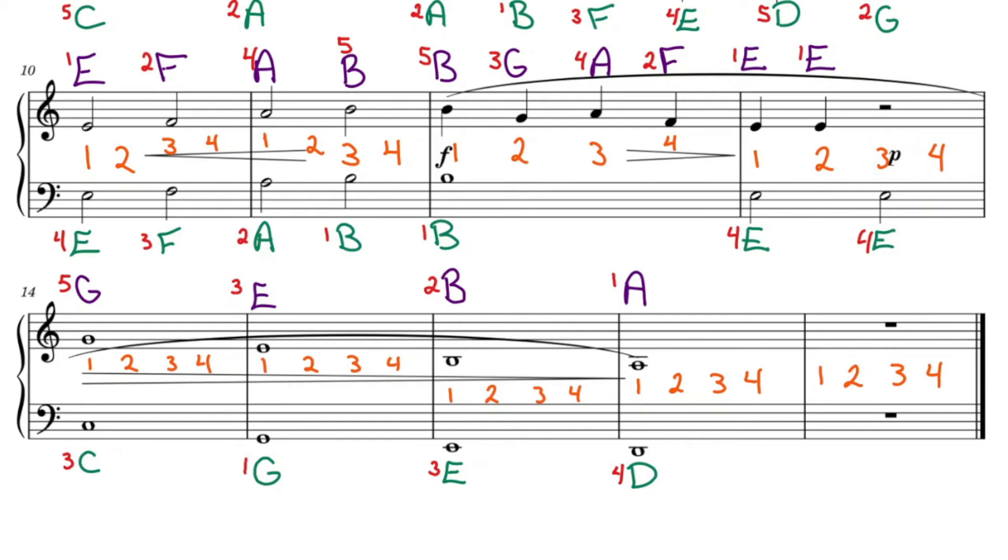When this rainbow or hill-like curve is connecting notes of different names, it's called a slur, meaning smooth. All of our right hand notes underneath this line are going to be nice and smooth, while our left hand is going to be detached.